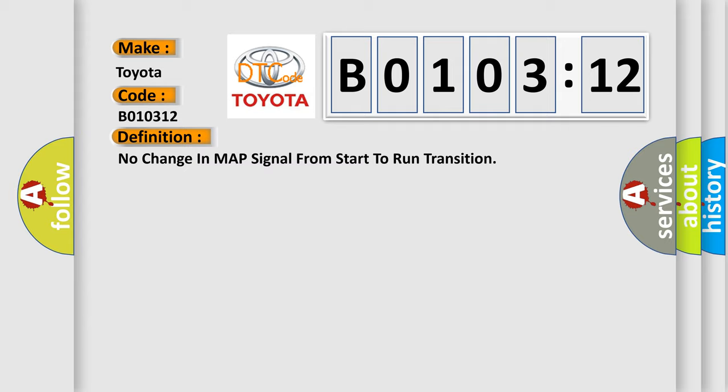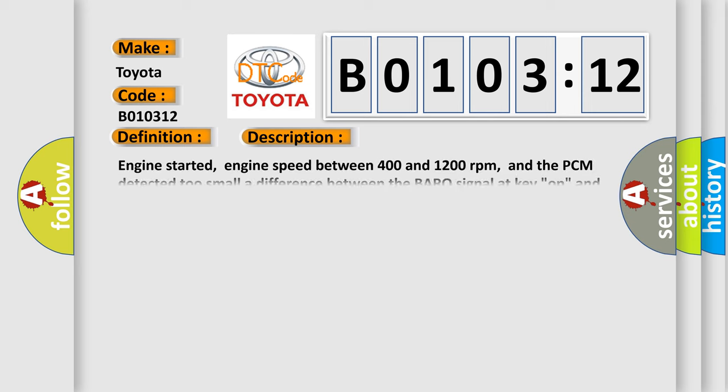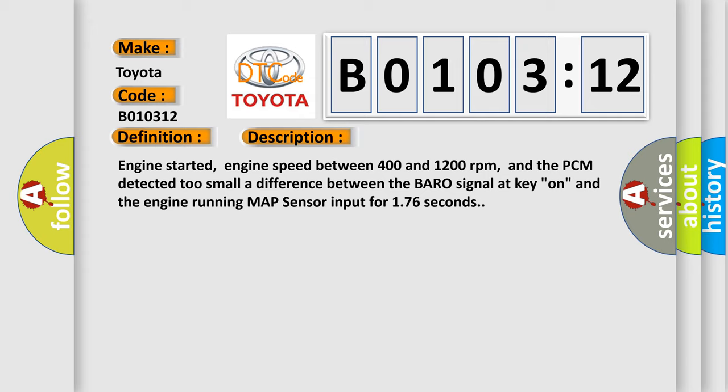The basic definition is No change in map signal from start to run transition. And now this is a short description of this DTC code. Engine started, engine speed between 400 and 1200 revolutions per minute, and the PCM detected too small a difference between the barrow signal at key on, and the engine running map sensor input for 176 seconds.